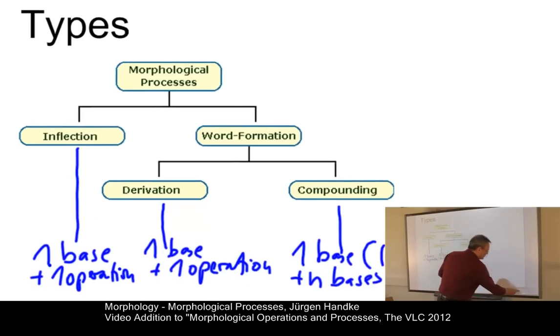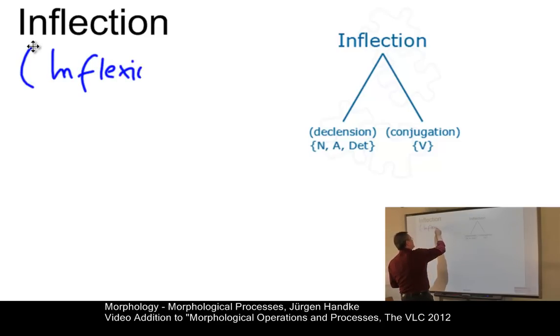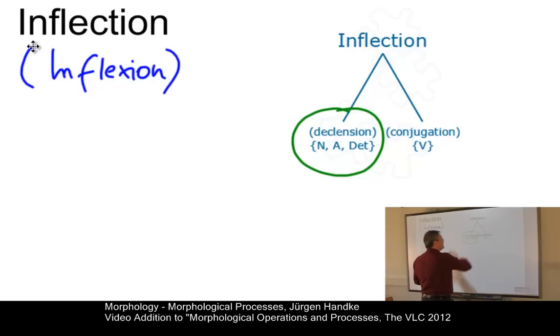Let's now look at them in more detail and first of all, look at some examples and some general information about these processes. Now, inflection is often, as you may have found in the literature, spelt alternatively inflection. And it is normally subdivided into two types and that has historical reasons. One type is called declension. It is the inflection or the inflectional process applied to nominal categories such as noun, adjective and determiner. And the other type of inflection is often referred to as conjugation and the main category that is involved here is the verb.